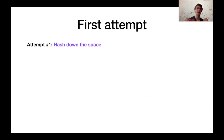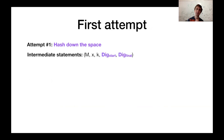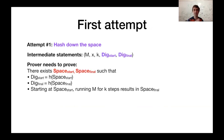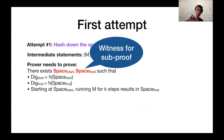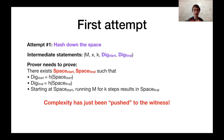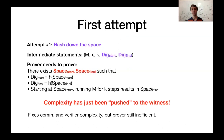The first attempt to fix this is to hash down the space. So our intermediate statements, instead of including the space, will include a hash or digest of the space. What the prover needs to prove is that there exists some initial space and final space consistent with these digests such that starting with this space and running the machine results in this final space. The initial and final space serve as the witness the prover needs for each sub-proof. The problem is that we've essentially just pushed the large-space problem into the witness, which will increase the complexity of the prover. So while this fixes the communication and verifier complexity, the prover will still be inefficient.